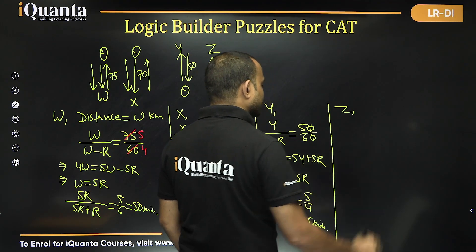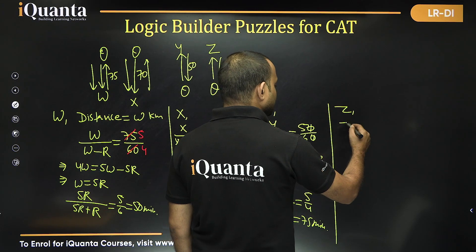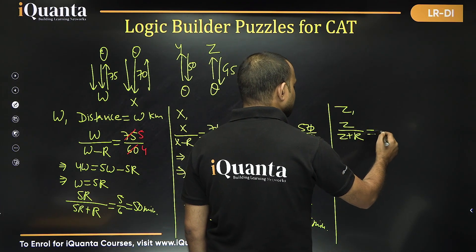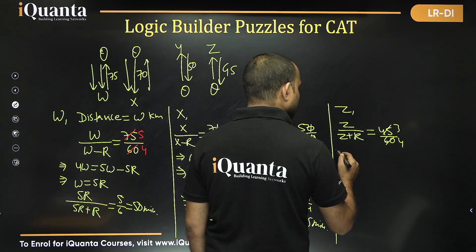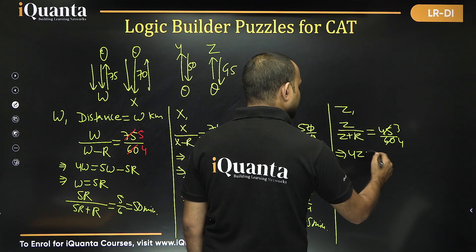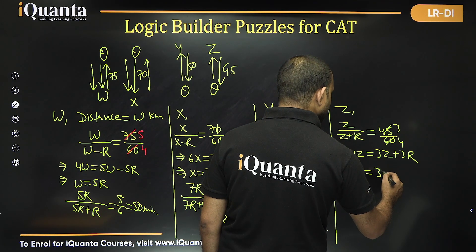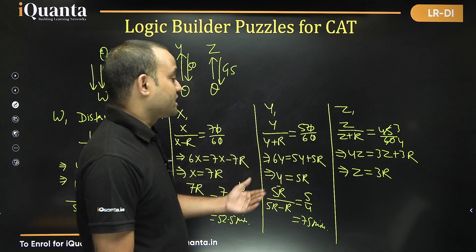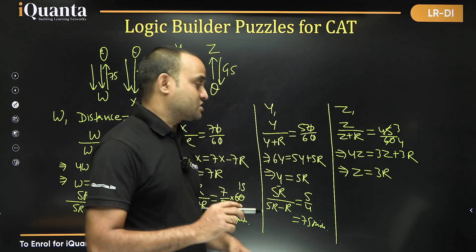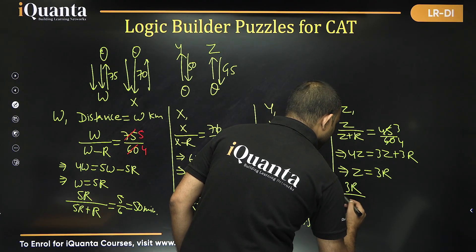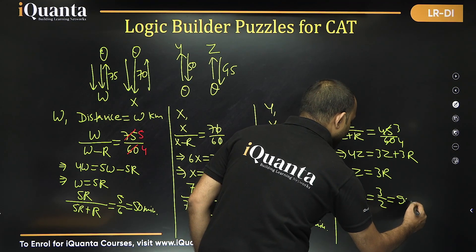For Zenger, his speed is Z km/h. Going downstream to Osborne: Z ÷ (Z + R) = 45/60 = 3/4. Solving: 4Z = 3Z + 3R, so Z = 3R. His return trip upstream: 3R ÷ (3R − R) = 3/2 hours = 90 minutes.